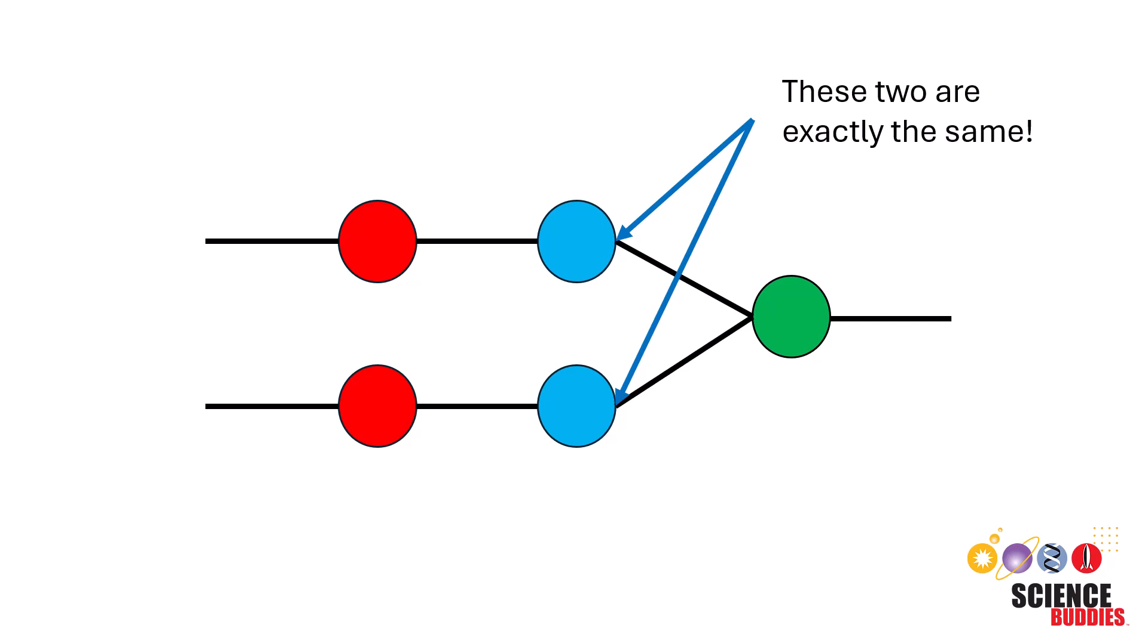The basic idea behind a Siamese neural network is using twin networks to compare inputs and determine their similarity or dissimilarity.